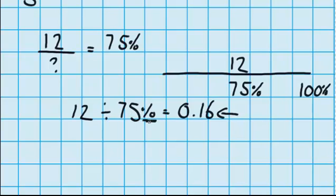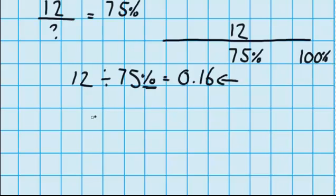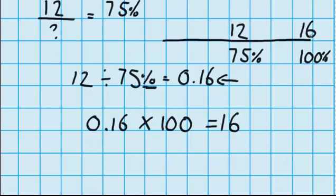Now if we know that every percentage point is worth 0.16, and we know that answering every question in the test correct would be 100%, we can do 0.16 times 100, which gets us 16, which is the total amount of questions in the test.